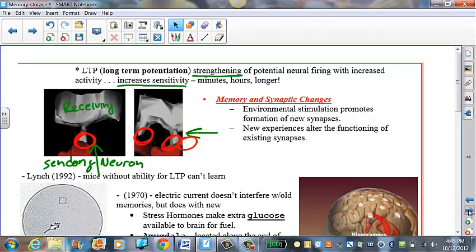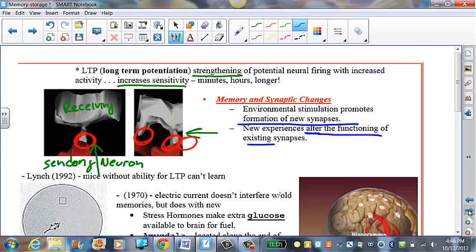So certainly environmental factors can promote formation of new synapses, and that's what we saw in the study in the aplasia. And it actually alters the functioning of the existing synapses.